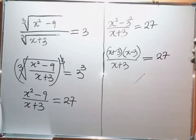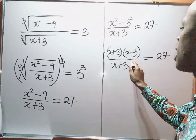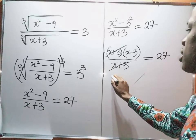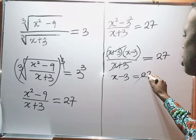So this is x plus 3 in the numerator and x plus 3 in the denominator. So x plus 3 cancels x plus 3, and at the end I have x minus 3 equal to 27.